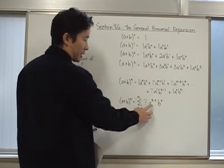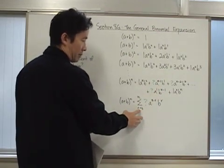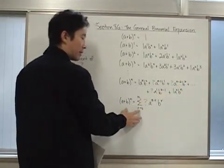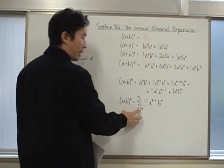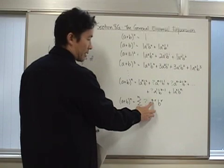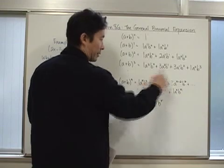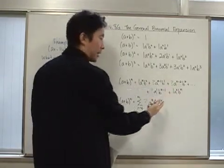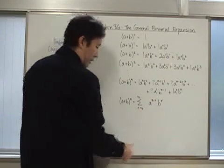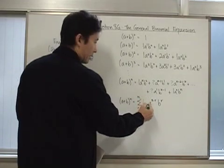If I let r be equal to two, then this is a to the n minus two, b to the second. And continuing on, when I finally get all the way up to the last term, which is r equals n, that would be a to the n minus n — which is a to the zero — and b to the n. So we know we're coming up with all the terms. The only thing that we have to worry about is our coefficient, which this question mark here is going to be very easily determined.